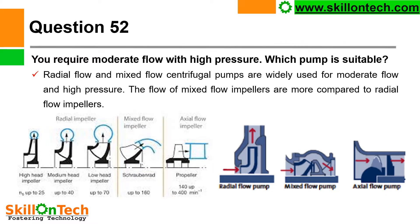Question 52: You require moderate flow with high pressure — which pump is suitable? You can see some pictures. Radial flow and mixed flow centrifugal pumps are widely used for moderate flow and high pressure. The flow of mixed flow impellers is greater compared to radial flow impellers. The specific speed of the pumps decides the type: for radial flow impellers, specific speed is up to 70; for mixed flow impellers, up to 160; and for axial flow impellers, up to 140 to 400 rpm.